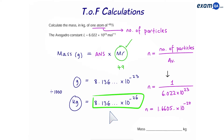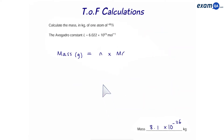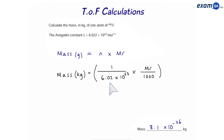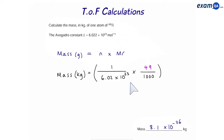This is the final answer. From this question, we can derive an important equation we can use throughout time of flight questions. To work out the mass of an atom in kilograms, we can simply do 1 over Avogadro's constant, times by the Mr of the atom, divided by 1000. The 1000 is there so that the answer is in kilograms. In this case, we used 49 as the Mr, and putting this into a calculator gives the same answer as before.